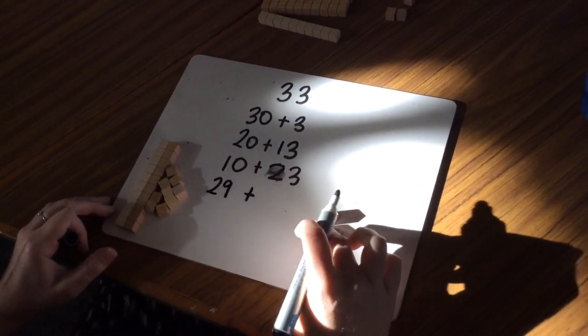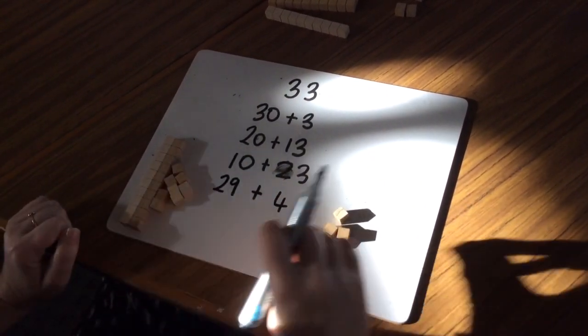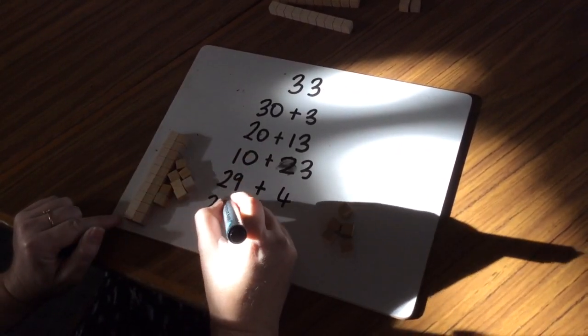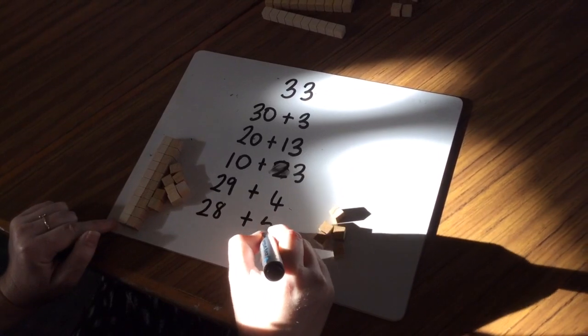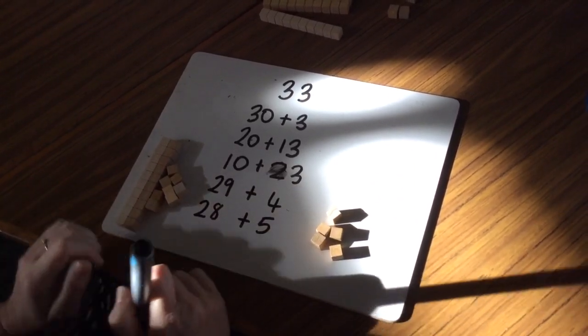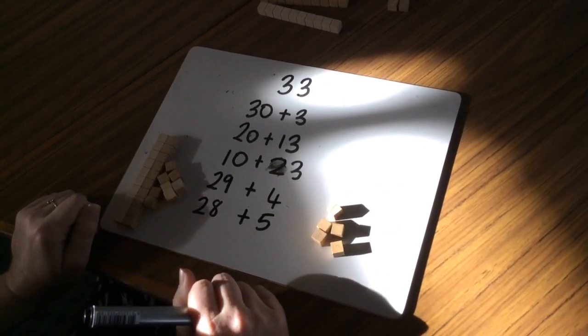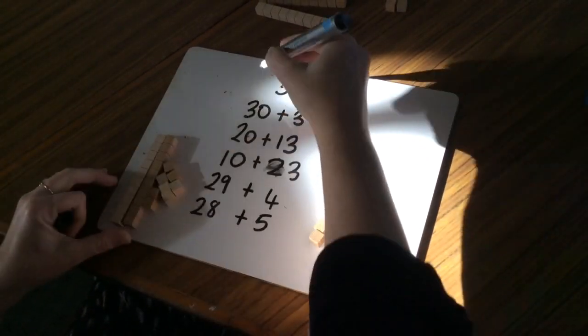Now I can take another one across. Now I've got one less again: 28 plus 5. And I can keep doing that until I've written out all the different number sentences that will make the number 33.